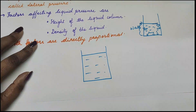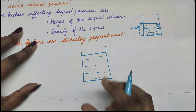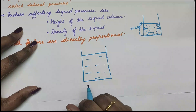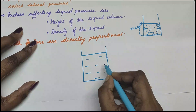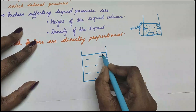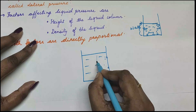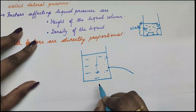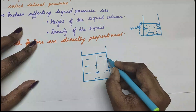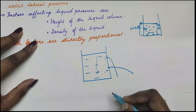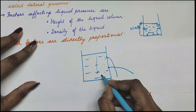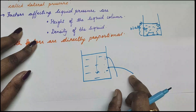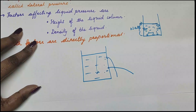As you saw in the experiment, we had taken a small bottle with openings on two ends. This deeper opening is near the bottom and this one is near the surface of water. As the depth increases, you saw the water shoots further out, but from the top position the water falls closer. This shows that as depth increases, the pressure in the water is increasing, causing it to spill further.